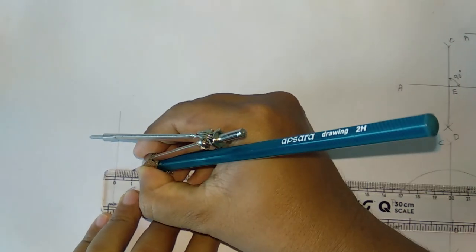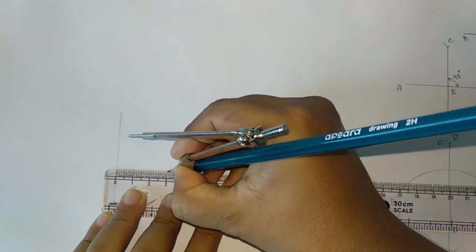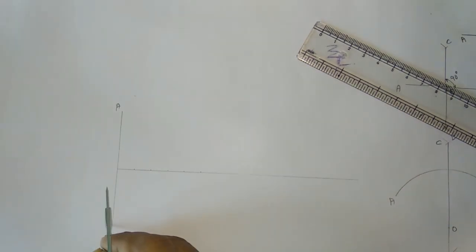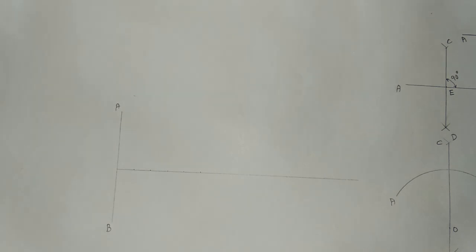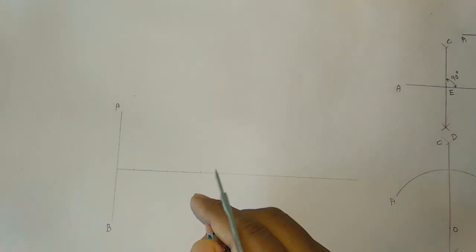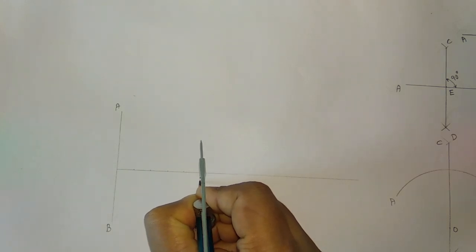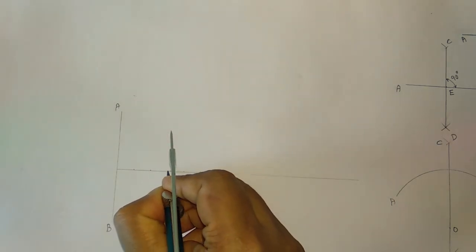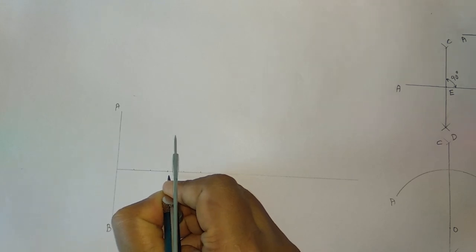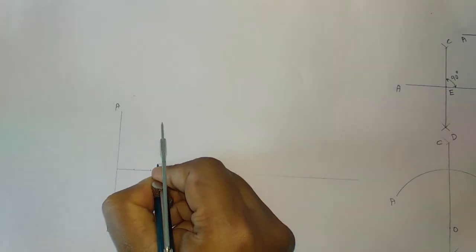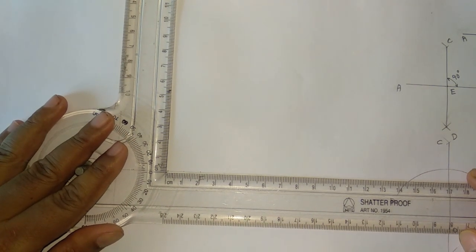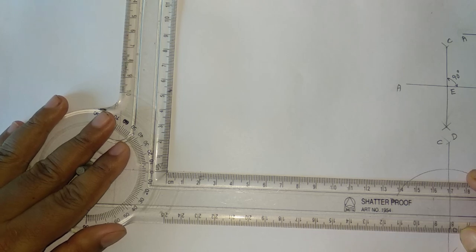This is my line AB and this is the focus F. Now eccentricity is 2 by 3, so my point B will be here. Now I have to draw a perpendicular line equal to 2 cm.